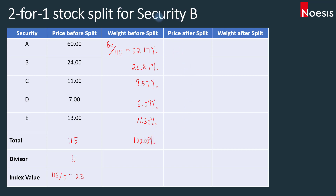If there is a 2-for-1 stock split for security B, in other words, one share of B will split and become 2 units of shares. The price of security B will halve — it will be divided by 2. So we take 24 divided by 2, so the price drops to $12. The rest of the securities will still have the same prices.